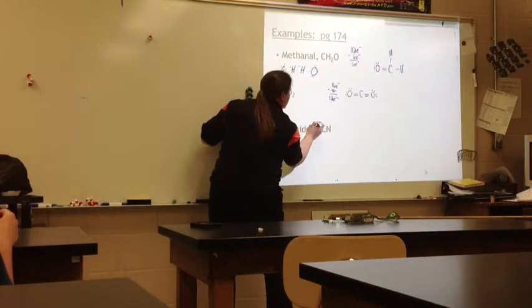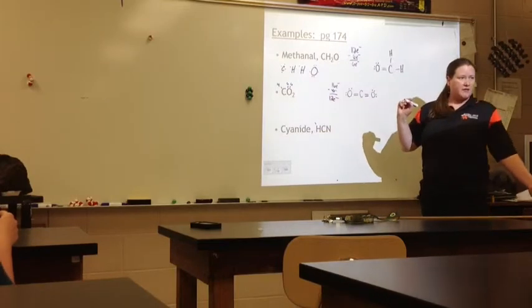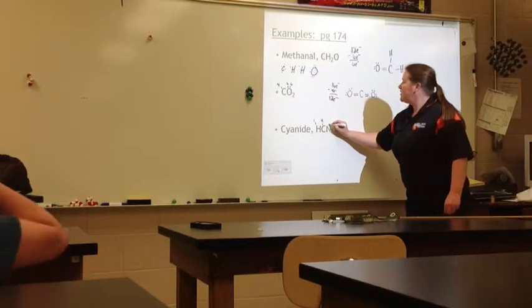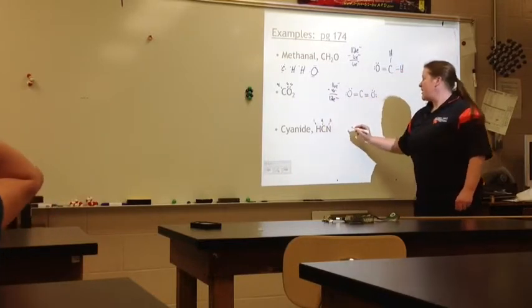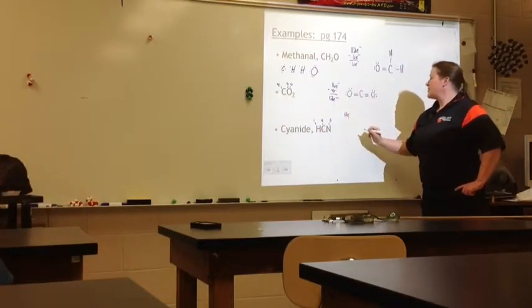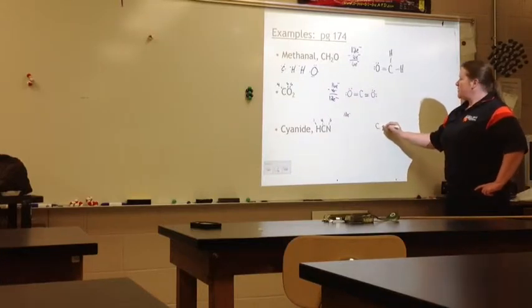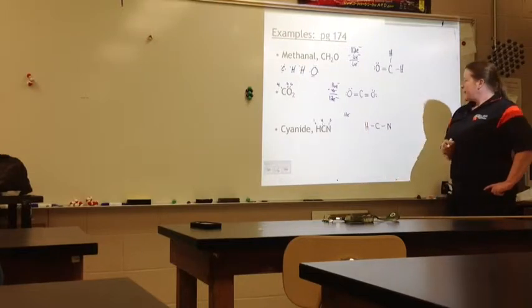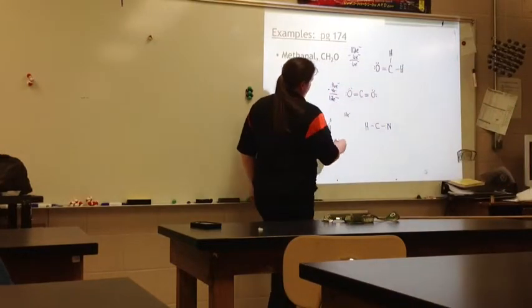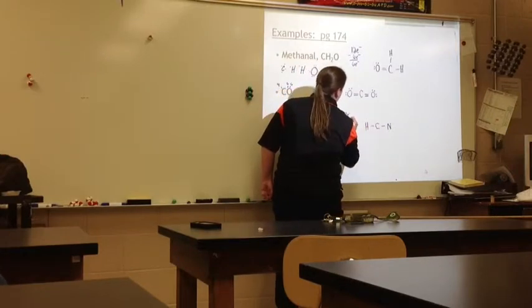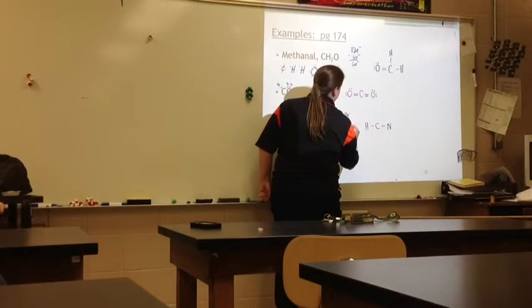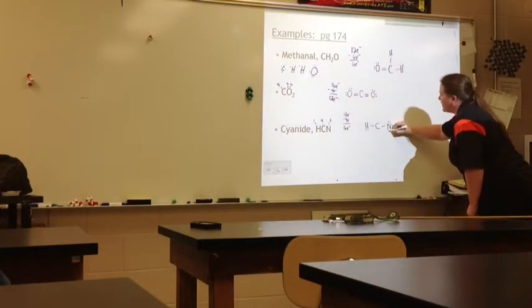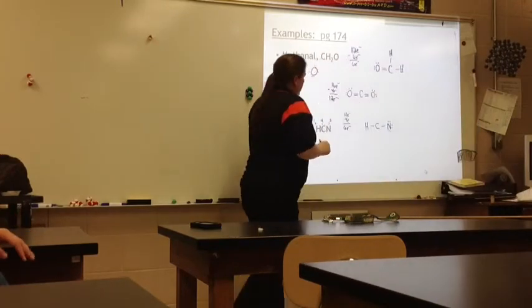Hydrogen cyanide. Does anyone have any questions at this point? Hydrogen has 1 valence electron. Carbon has 4. Nitrogen has 5. So, I have a total of 10 electrons. Put carbon in the middle. Attach my other atoms with single bonds. I've just used up 4 electrons. So, I have 6 left. One, two, three, four, five, six.